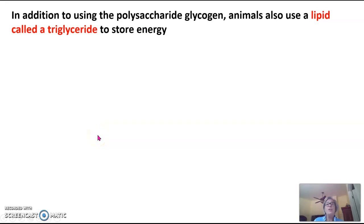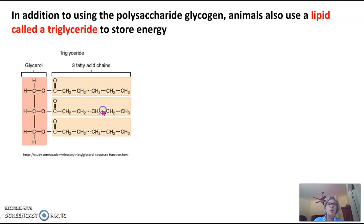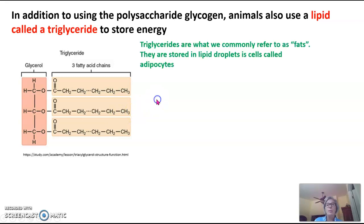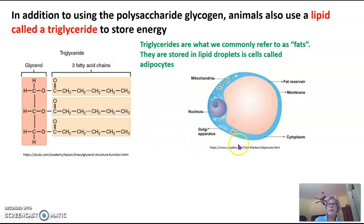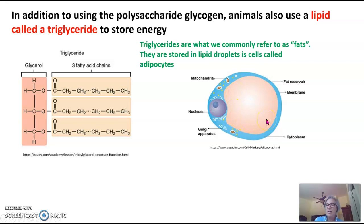In addition to using the polysaccharide glycogen, animals also use a lipid called a triglyceride to store energy. A triglyceride is shown here — again, this is not a polymer. Triglycerides are what we often refer to as fats, and they're stored in lipid droplets in cells called adipocytes. This adipocyte cell is surrounded by a membrane composed of a phospholipid, and inside it has a fat droplet or fat reservoir full of triglycerides, which we use to store energy — and that is a lipid.